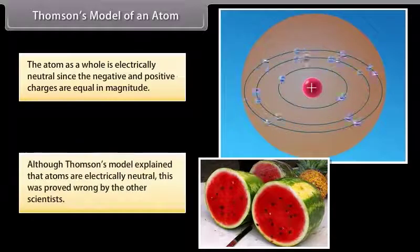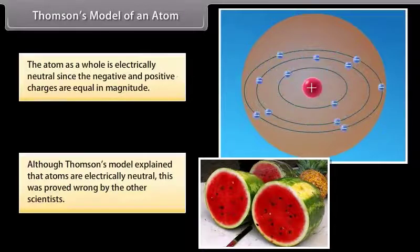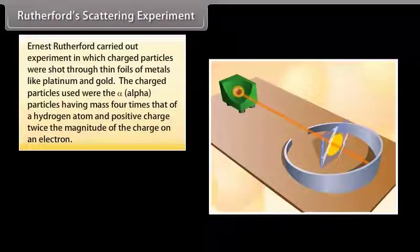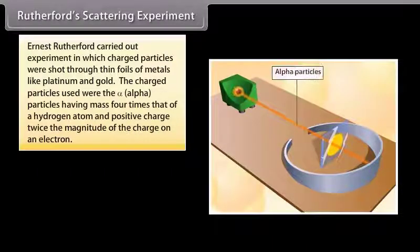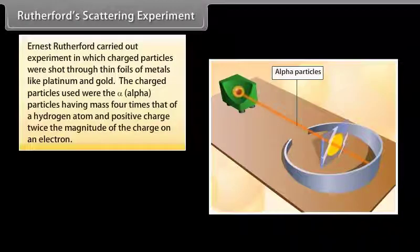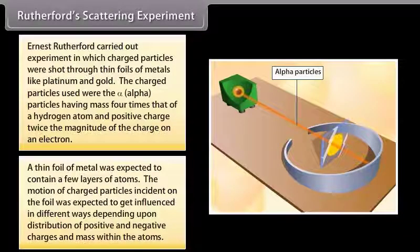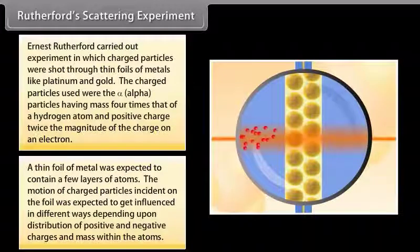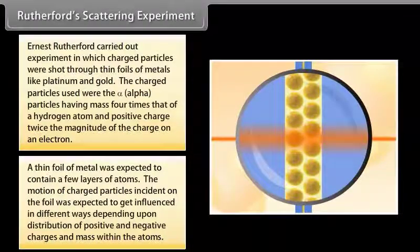Although Thomson's model explained that atoms are electrically neutral, this was proved wrong by other scientists. Ernst Rutherford carried out an experiment in which charged particles were shot through thin foils of metals like platinum and gold. The charged particles used were alpha particles, having mass four times that of a hydrogen atom and positive charge twice the magnitude of the charge of an electron. A thin foil of metal was expected to contain a few layers of atoms, and the motion of charged particles was expected to be influenced depending upon the distribution of positive and negative charges and mass within the atoms.